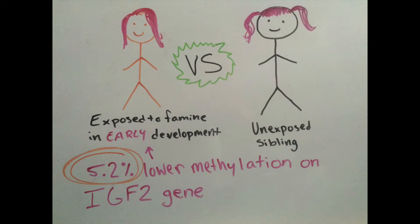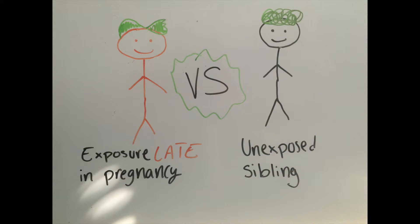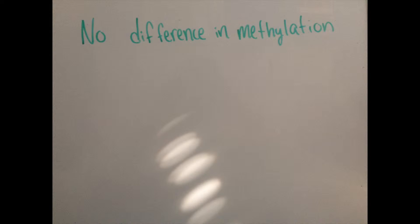Scientists observed a 5.2% lower methylation on the IGF-2 gene by the individuals exposed to the famine early in their development. On the other hand, when scientists compared individuals who were exposed to the famine in late development, or the small babies, there was no significant change in methylation.